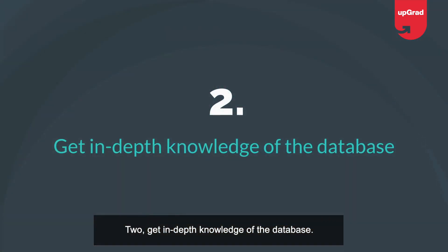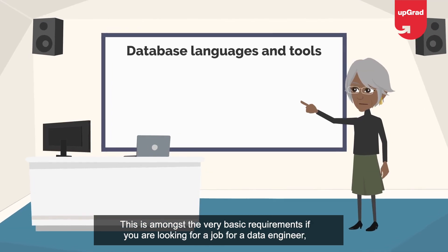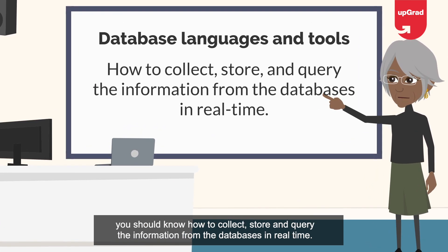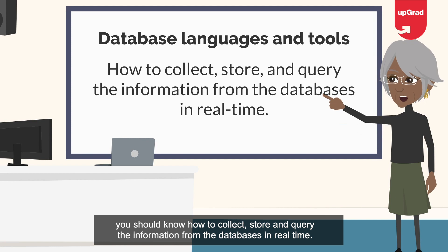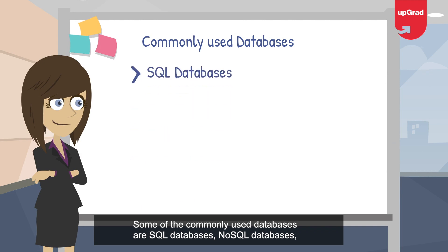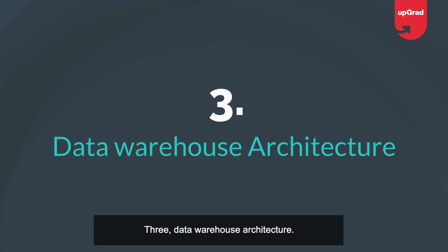Step two: get in-depth knowledge of databases. To be a data engineer, you need a very firm grip on database languages and tools — this is among the most basic requirements. You should know how to collect, store, and query information from databases in real time. Commonly used databases include SQL databases, NoSQL databases, PostgreSQL, MySQL, and MSSQL.